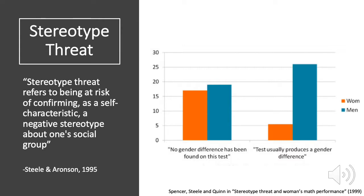The graph shown in this slide is typical of the way these studies are done. You have two or more conditions. In the control condition, the stereotype is not made salient — before taking the math test, students were told that there was no gender difference found on this test. In the experimental condition, they were told the test usually produces a gender difference. And it's the same test. When the stereotype about gender differences is highlighted — that men are better at math than women — men's performance is slightly better, and women's performance is depressed.